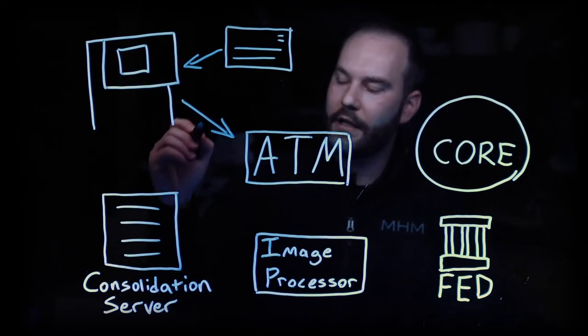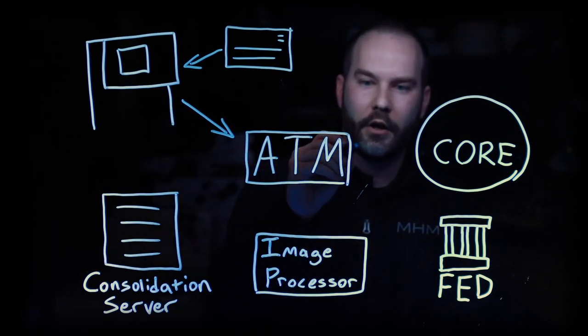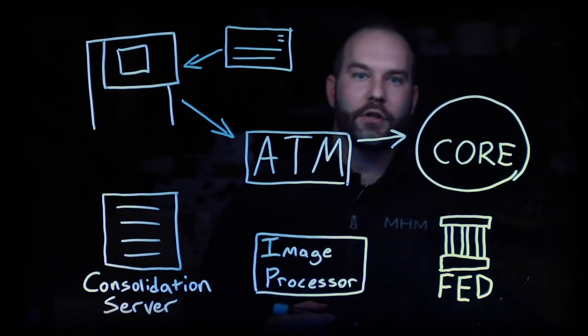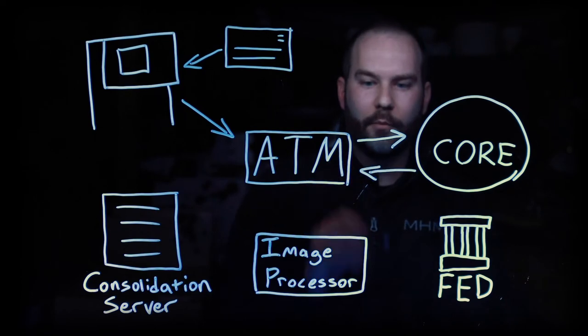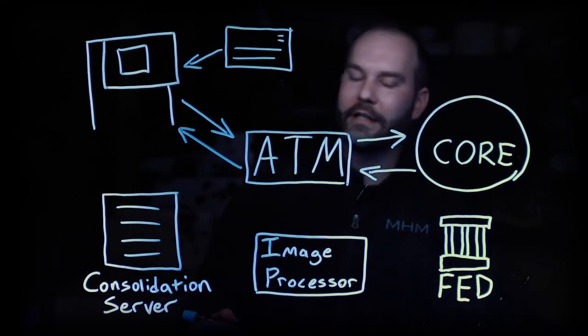At that point it's going to send that deposit information to the ATM network to be processed, which will then in turn send that information to the core to verify their customers, verify they have the proper accounts and all of that. The core will then send the approval back to the ATM network and the ATM network will send that back to the ATM.